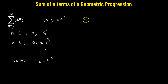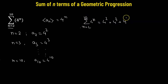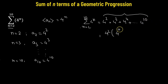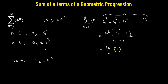The summation of 4 to the power of n where n goes from 2 to 10 equals 4 squared plus 4 cubed plus 4 to the power of 4, all the way up to 4 to the power of 10. This is a geometric progression with first term 4 squared and common ratio 4 cubed divided by 4 squared, which is 4. Since we go from n equals 2 to 10, there are 9 terms. Applying the formula, we get 4 squared times (4 to the power of 9 minus 1) divided by (4 minus 1), which gives 16 divided by 3, multiplied by (4 to the power of 9 minus 1), as the final value.